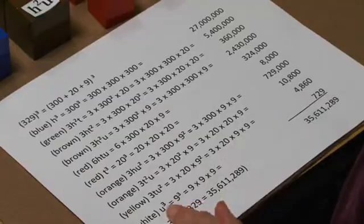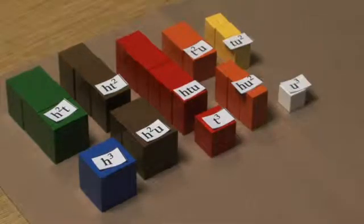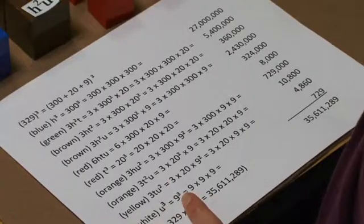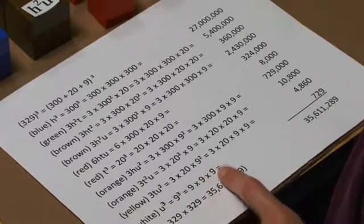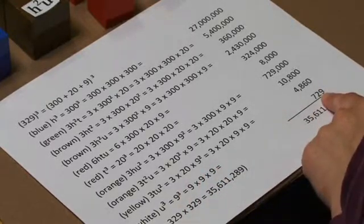And then our last component is the white cube or our unit cube. That's 9 cubed or 9 times 9 times 9. And that equals 729.